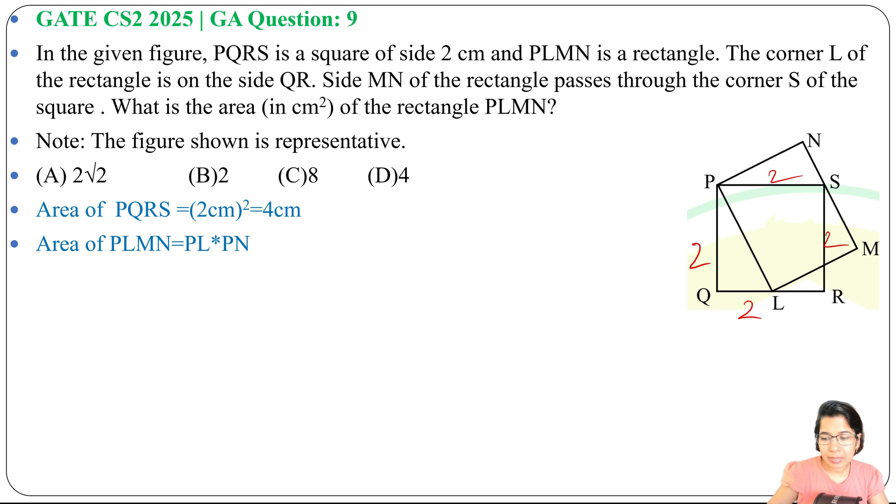This is 90 degrees. If this is theta, this will be 90 minus theta. And if you consider angle NPL, that's also 90 degrees, then this is again theta.